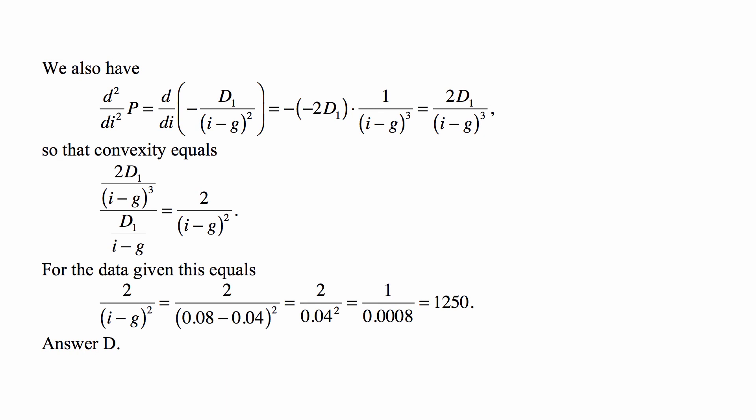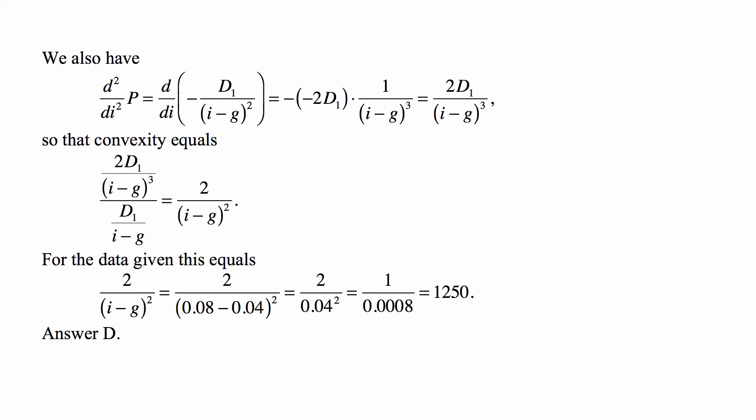And now, we look at the second derivative. We take the derivative with respect to I of minus D1 over (I minus G) squared. And we get a second minus, so the minuses cancel. And we get 2D1 times 1 over (I minus G) cubed.